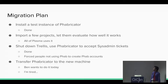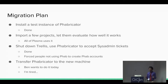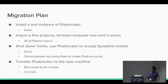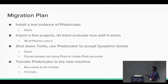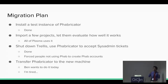Our migration plan: we started by installing a test instance on Jeff Mitchell's personal server — Jeff is one of our long-time sysadmins. We imported a few test projects and let them evaluate how well it works. In the end, all of Plasma ended up migrating to Fabricator and they're very happy with it. The downside is there's way too much data now, so we can't start over — we'll have to migrate the database from the old machine to the new one.